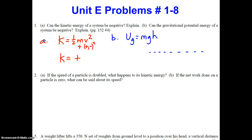If this dotted line represents the base level at which we assign the object's height to be 0, the object can move up, down, and then below the base level. Above the dotted line represents a positive H value; below that dotted line represents a negative H value. So there are cases in which gravitational potential energy can be negative — specifically when the object travels below its assigned base level, giving it a negative height.